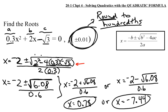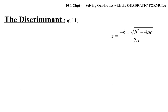There are the two solutions, allowed to be rounded to the hundredths place because of what's presented in the question. It all comes down to effectively punching the information into your quadratic formula correctly.